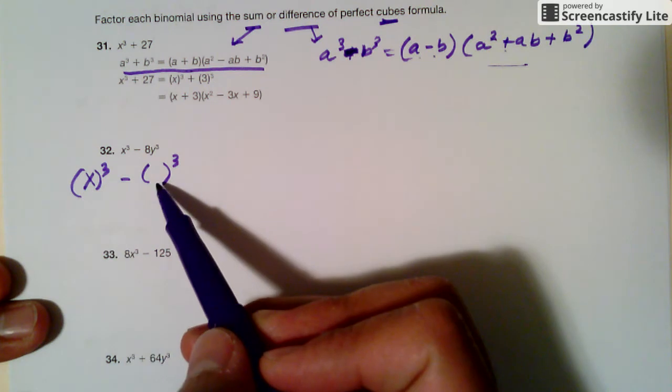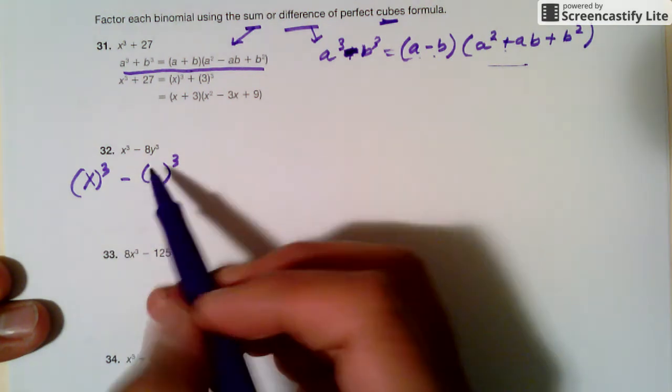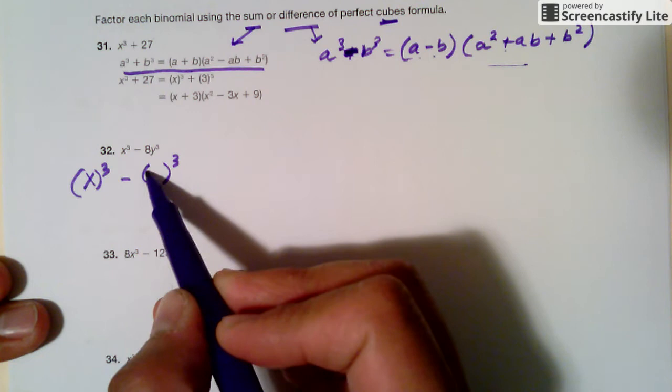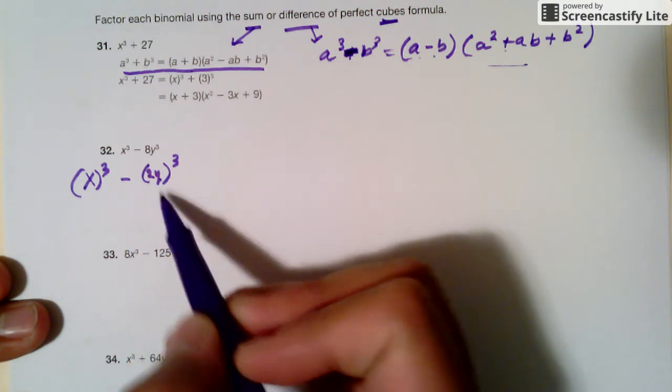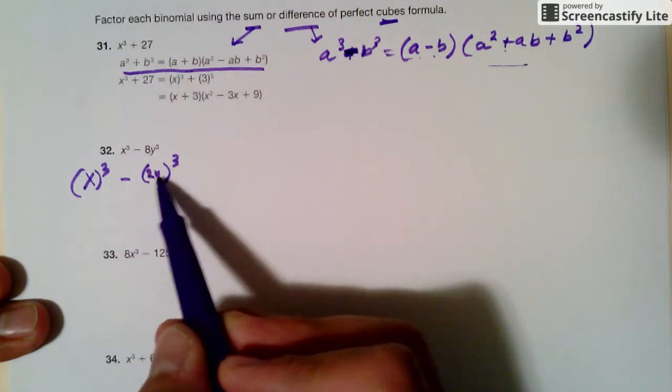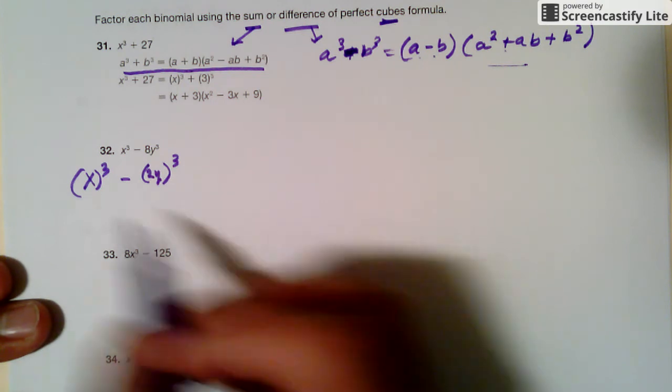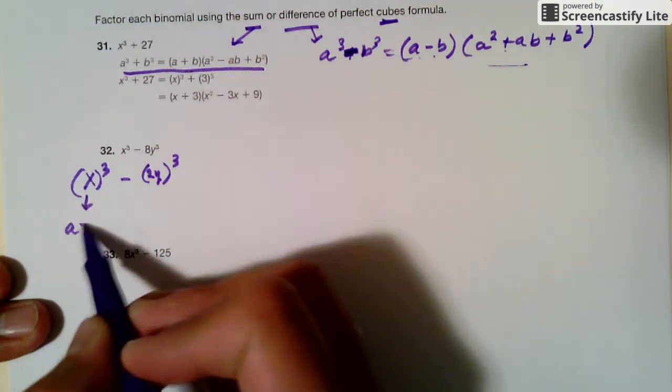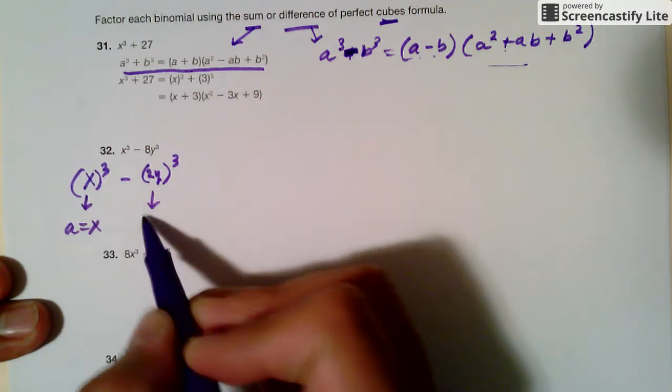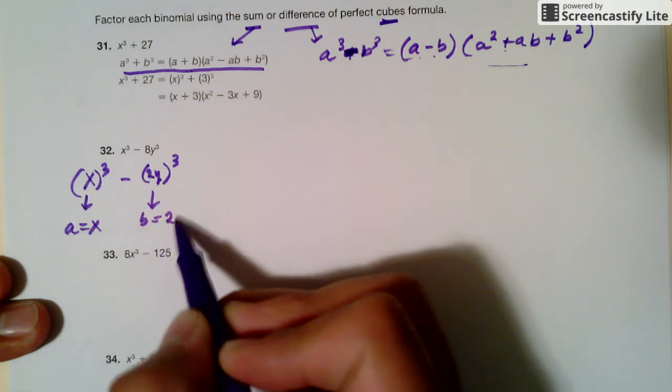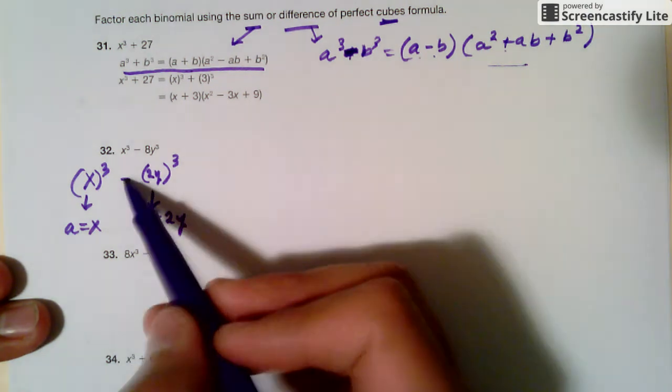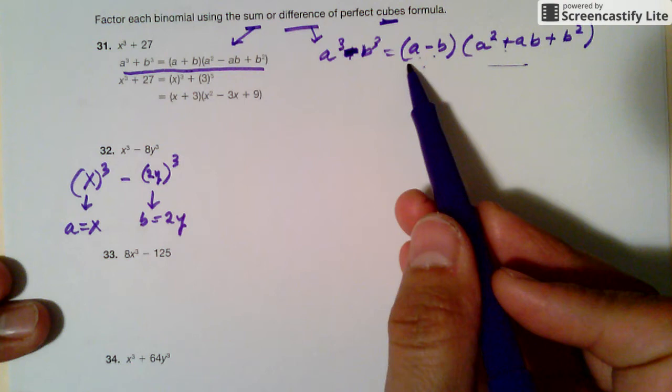So there's a cube here and a cube here, but to see this cube, you're going to rewrite it as 2y, because 2 cube is 8, and then y cube is y cube. So this takes in the row of the a, and this takes in the row of the b. And it's actually a minus, so we're going to use this, the difference part.